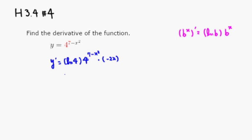So this is going to be equal to, let's see, how do I write it? So negative 2x natural log of 4 times 4 to the 7 minus x squared.